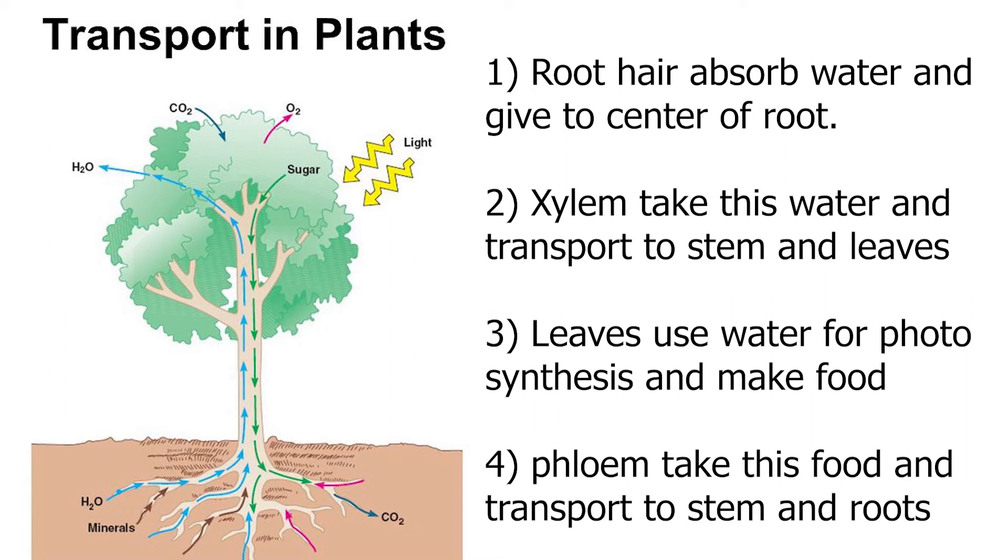In xylem, what happens? First of all, root here absorbs all the water and minerals from the soil and bring it to the center of the root. And from center of the root, xylem take this and transport it to all the parts of the trees like branches, stem, leaves. Now, leaves use some of the water for photosynthesis purpose. And some of the water is being lost into the air by the process transpiration through the pores called stomata. So, this happens in xylem.